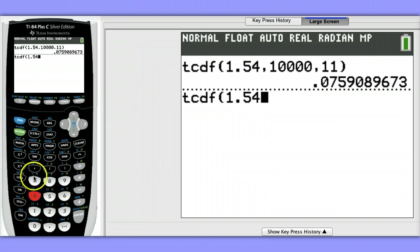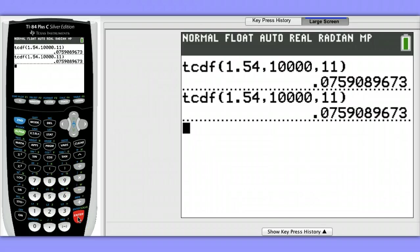You have to remember the syntax. You have to remember that first you have the lower bound, and then the upper bound, and then your degrees of freedom. So that's a little harder since you have to remember that. It's much easier if you have the template that you just have to fill in.